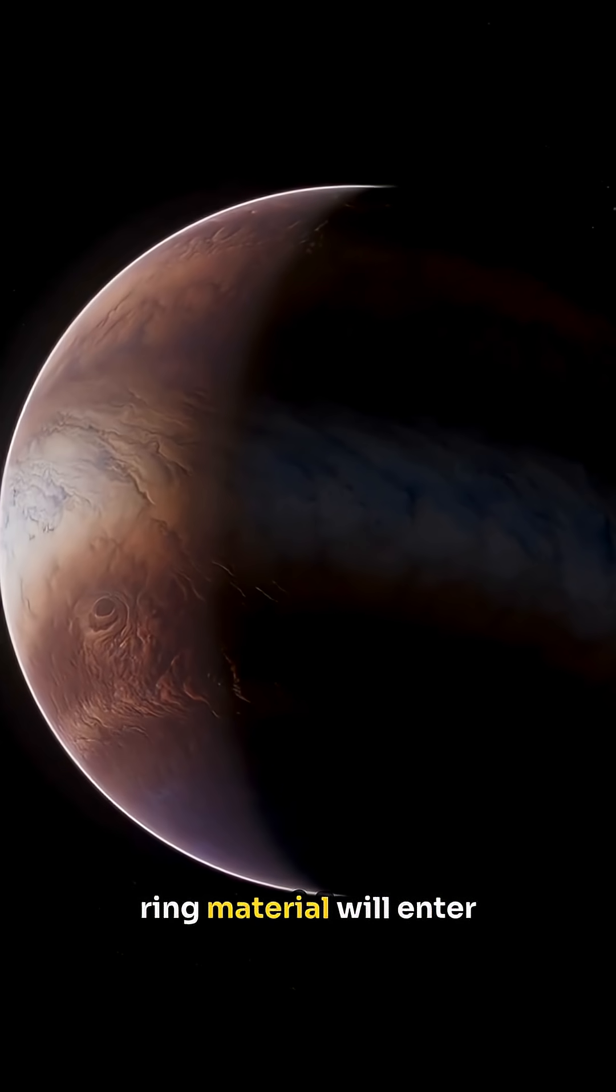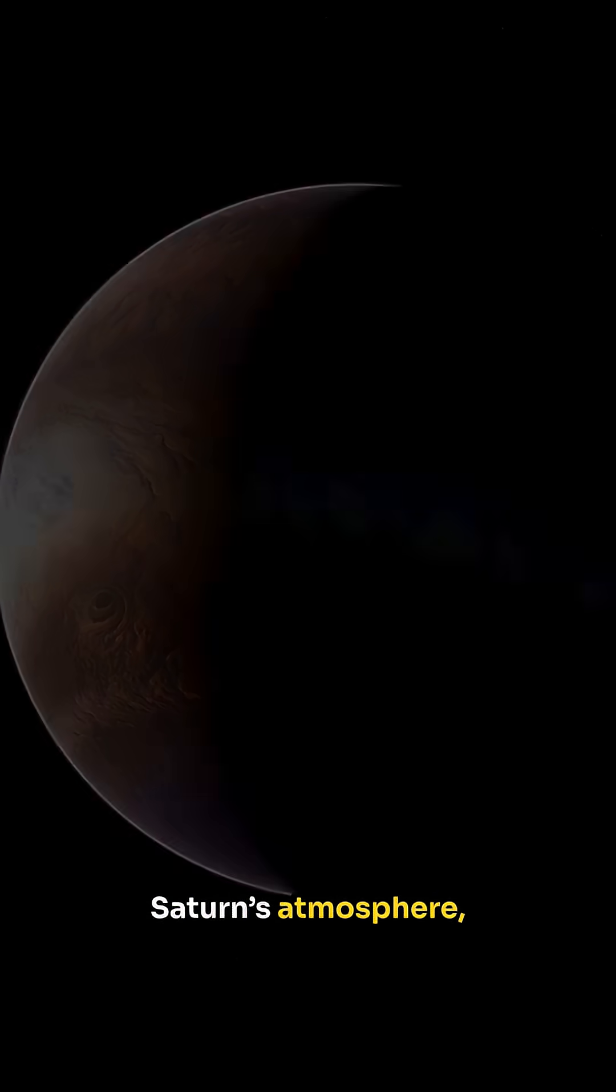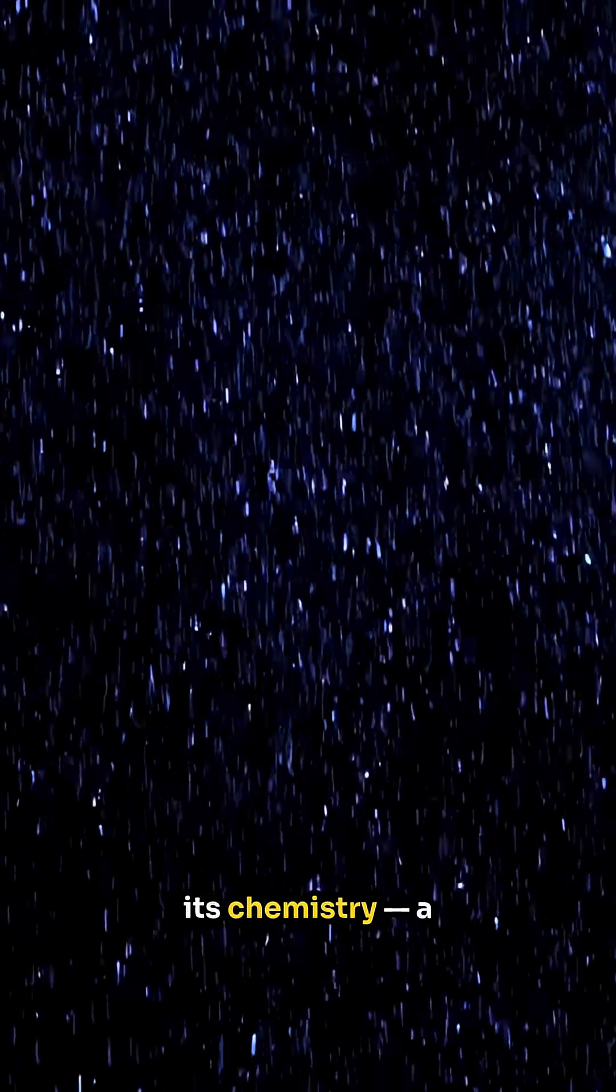Some of the falling ring material will enter Saturn's atmosphere, slightly changing its chemistry, a kind of cosmic rain made of ice and dust.